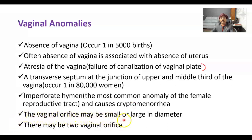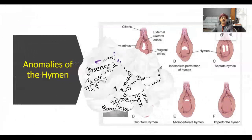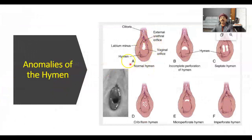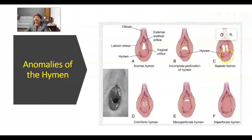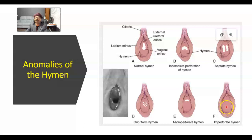The vaginal orifice may be small or large in diameter; it varies from person to person. There may also be two vaginal orifices. The anomalies of the hymen include: normal hymen, incomplete perforation, septate hymen with a septum, cribriform hymen with multiple openings, microperforate hymen, and imperforate hymen — which may lead to cryptomenorrhea where menstrual blood cannot exit through the vagina.